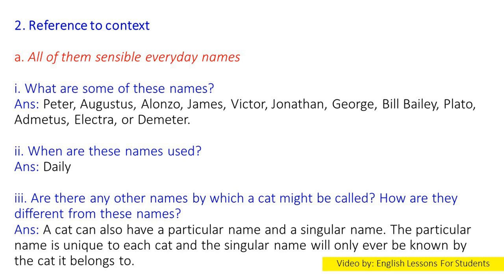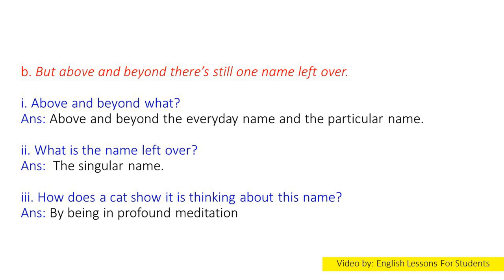3. Are there any other names by which a cat might be called? How are they different from these names? Answer: A cat can also have a particular name and a singular name. The particular name is unique to each cat, and the singular name will only ever be known by the cat it belongs to. B. 'But above and beyond there is still one name left over.' 1. Above and beyond what? Answer: Above and beyond the everyday name and the particular name.